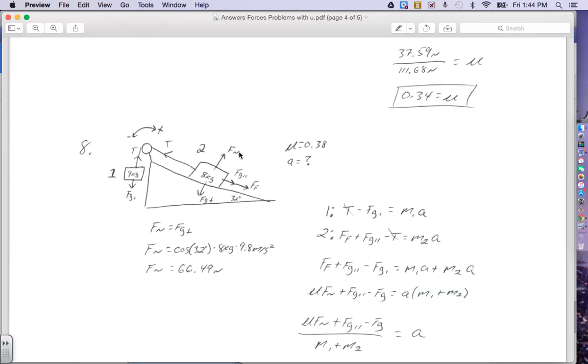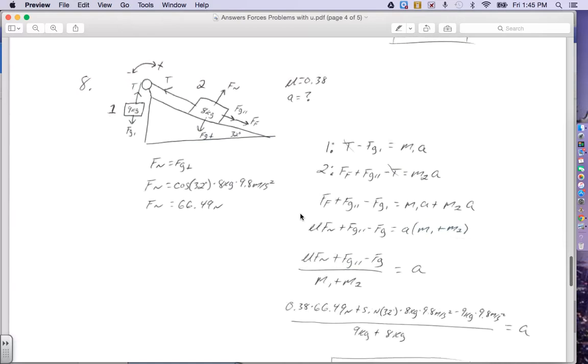But since we're using friction, we better figure out what that normal force is, and the normal up has to equal gravity perpendicular down because it's not accelerating in the Y direction. And when I plug into my equation for gravity perpendicular, I get cosine of 32 times the mass, which is 8 times G, which is 9.8 meters per second squared. That gives me a normal force of 66.49 Newtons.